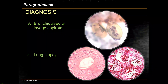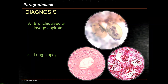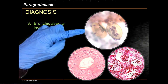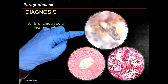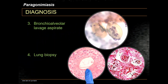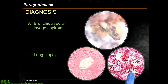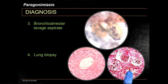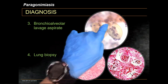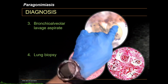Other diagnostic techniques include bronchoalveolar lavage aspirate and lung biopsy. Using a Pap stain and an H&E stain, both in the aspirate and biopsy samples, you'll be able to see the Paragonimus ova.